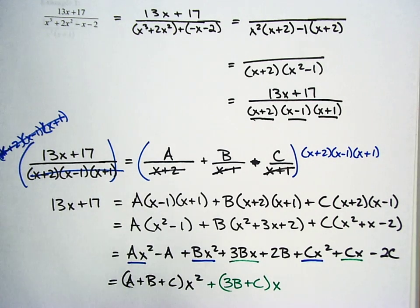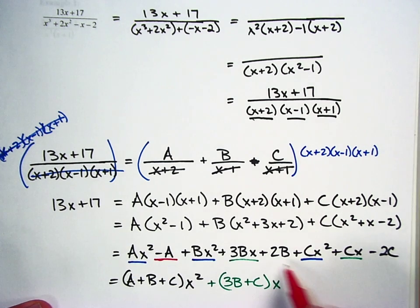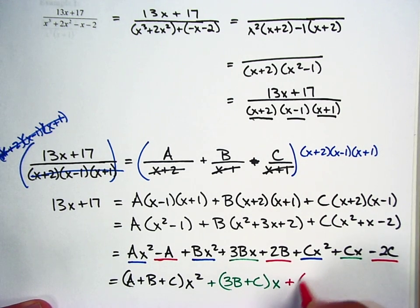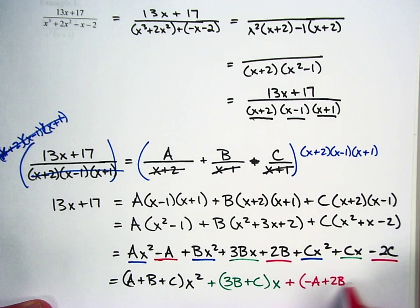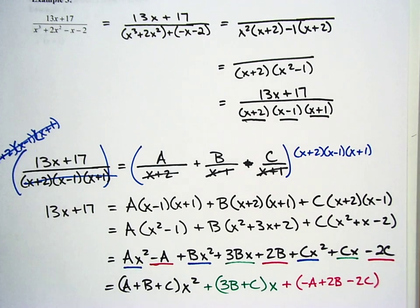And then my constant terms, I have negative A, 2B, and negative 2C. So that's going to be plus negative A, plus 2B, minus 2C. And so those are my three terms.